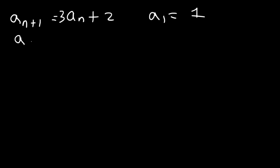So if n is 1, n plus 1 is 2. So the second term is 3 times the value of the first term plus 2. So it's 3 times 1 plus 2, which is 5.